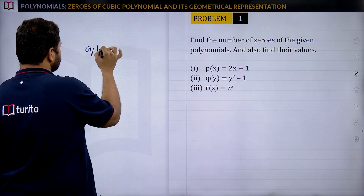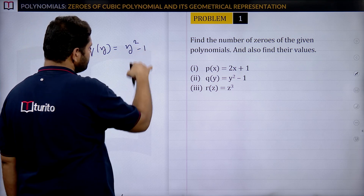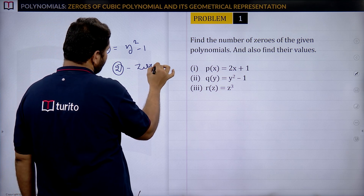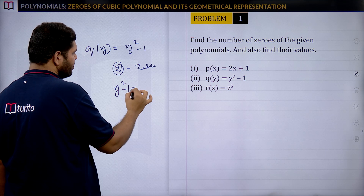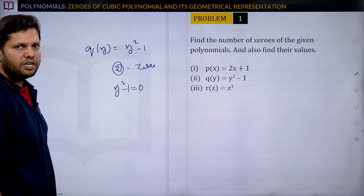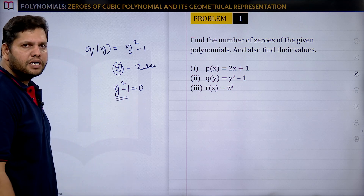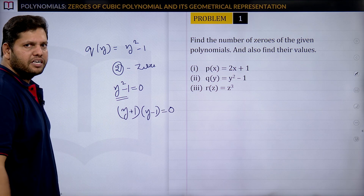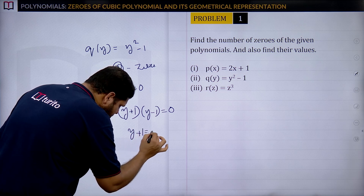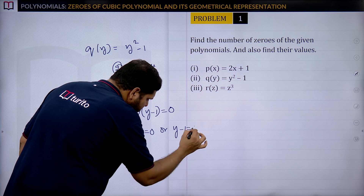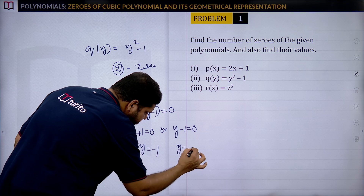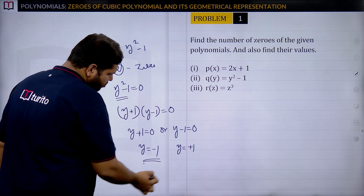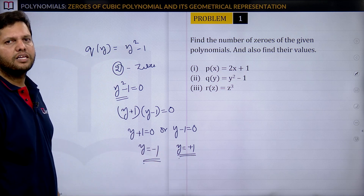For q(y) = y² − 1, it is a quadratic polynomial with two zeros. Setting y² − 1 = 0, we factor using the difference of squares: (y + 1)(y − 1) = 0, giving y = −1 or y = 1. The two zeros are −1 and +1.